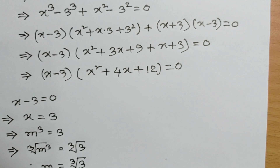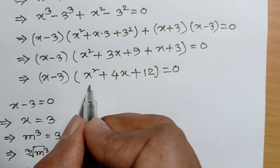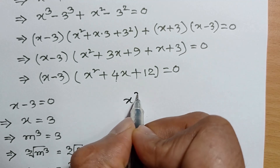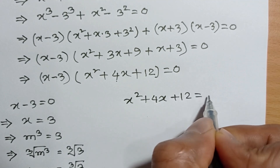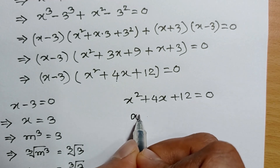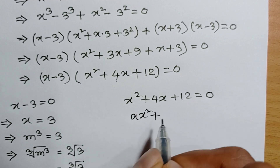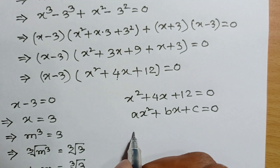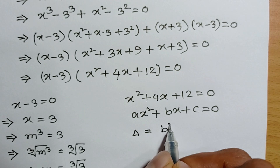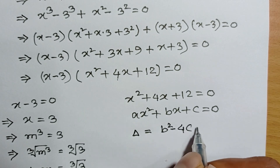Now for the other factor: x squared plus 4x plus 12 equals 0. This is a quadratic equation. Comparing with ax squared plus bx plus c equals 0, the discriminant is b squared minus 4ac.